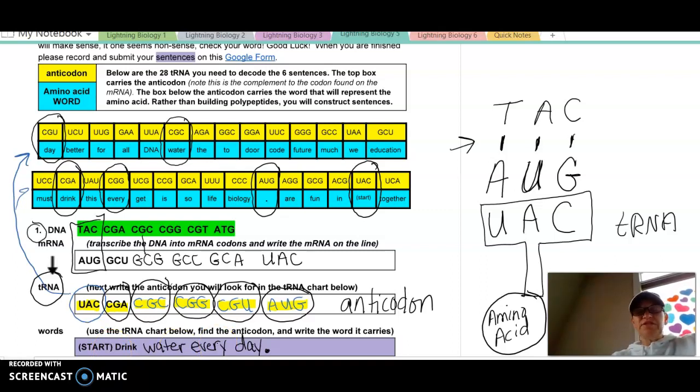So this is what happens in your cells billions of times every second. Your DNA takes its message. It gets transcribed into messenger RNA. The messenger RNA goes out of the nucleus to the ribosome, where the ribosome calls in the transfer RNA, which has the anticodon. And the transfer RNA is carrying the amino acid. And so in this case, our words are acting like the amino acids. Because when I string amino acids together, I get a protein. Just like when I string words together, I get a sentence.